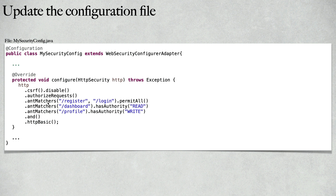The next step is to update the configuration file. Inside the security configuration file, we are going to customize the HTTP request inside the configure method. We will permit all for slash register and slash login — these are public endpoints anyone can access. The slash dashboard endpoint is only accessible for users with read authority, and the slash profile endpoint is accessible for users with write authority.